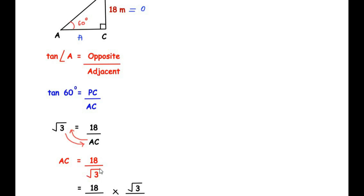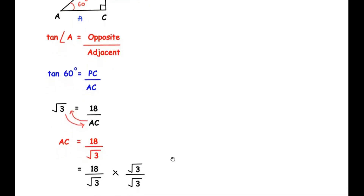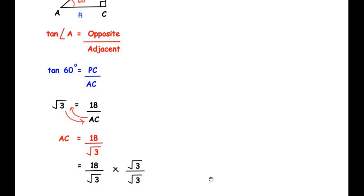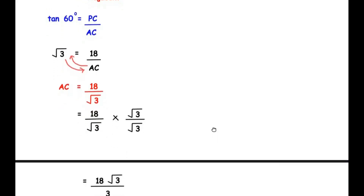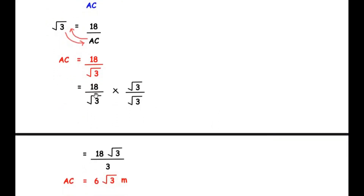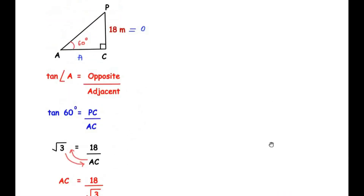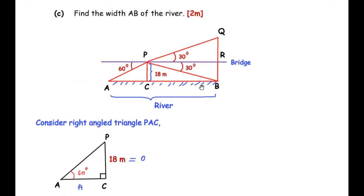Rationalizing: 18/√3 × √3/√3 = 18√3/3. Since 18 ÷ 3 = 6, the length AC = 6√3 meters. Now we focus on finding the length BC.